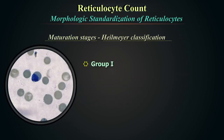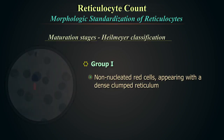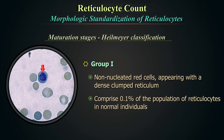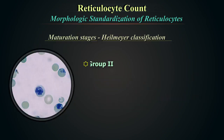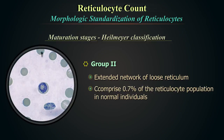Group 1 represents non-nucleated red cells appearing with a dense clumped reticulum. They comprise 0.1% of the reticulocyte population in normal individuals. Group 2 represents an extended network of loose reticulum and comprises 0.7% of the total reticulocyte population in normal individuals.